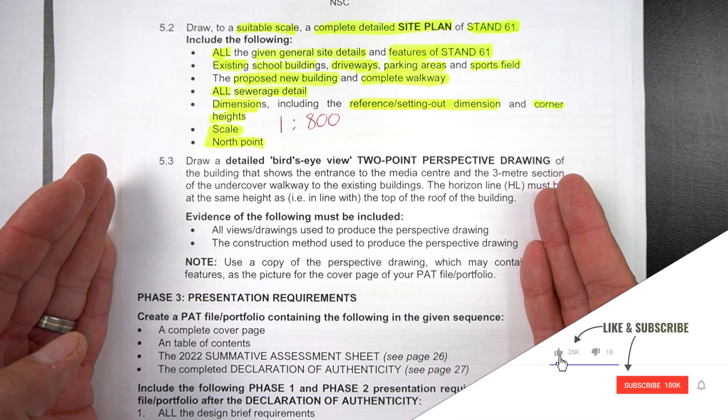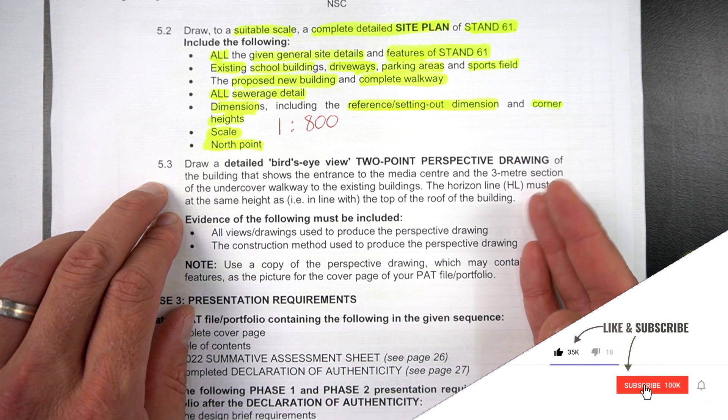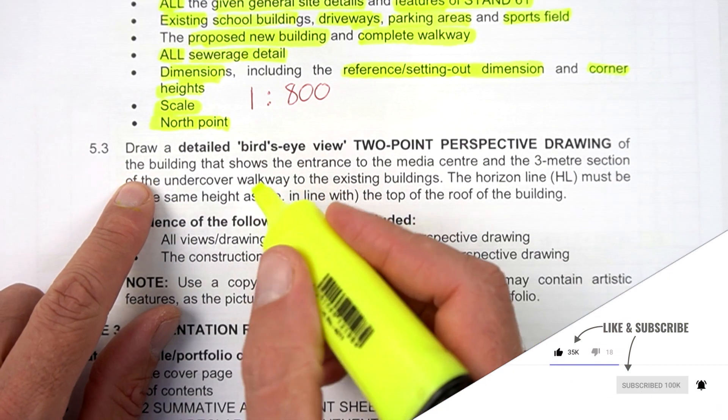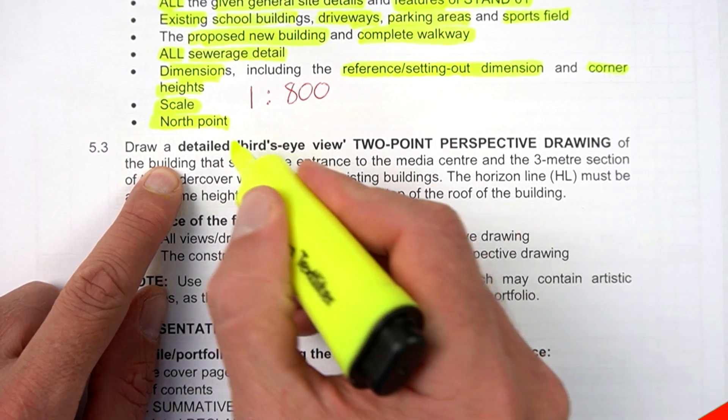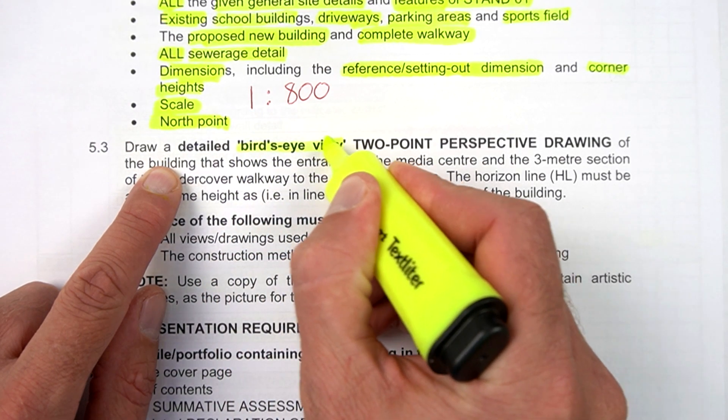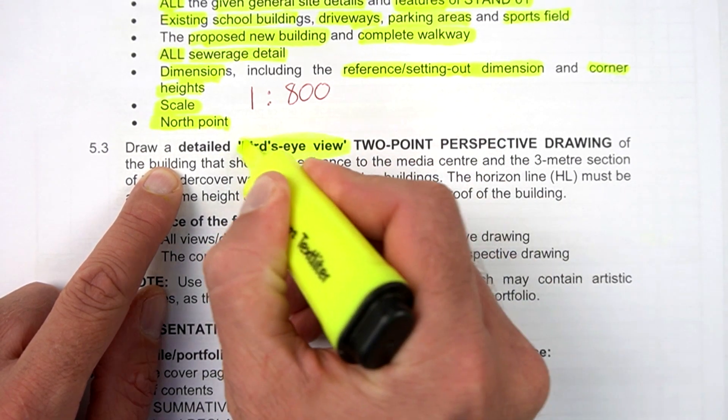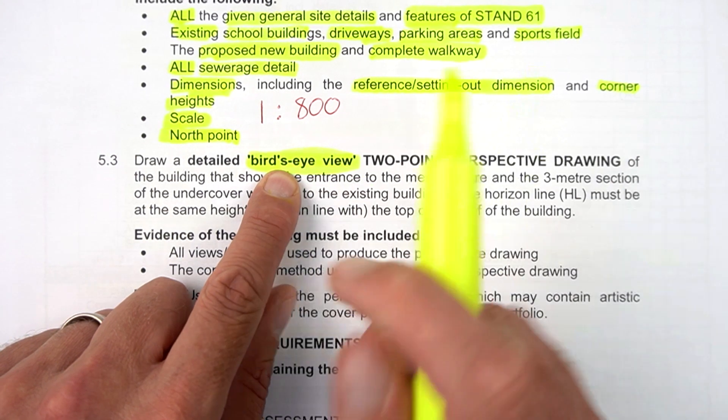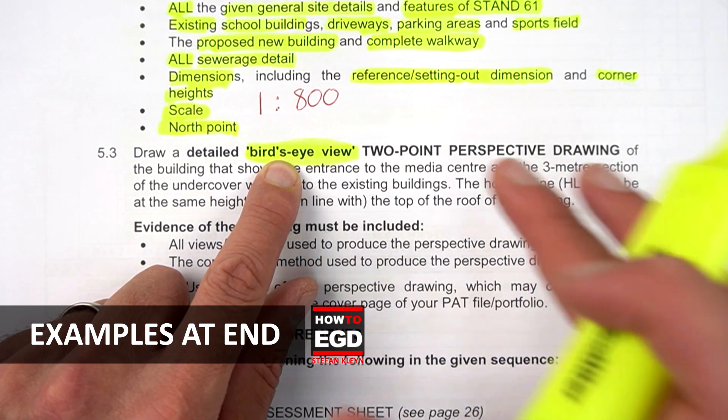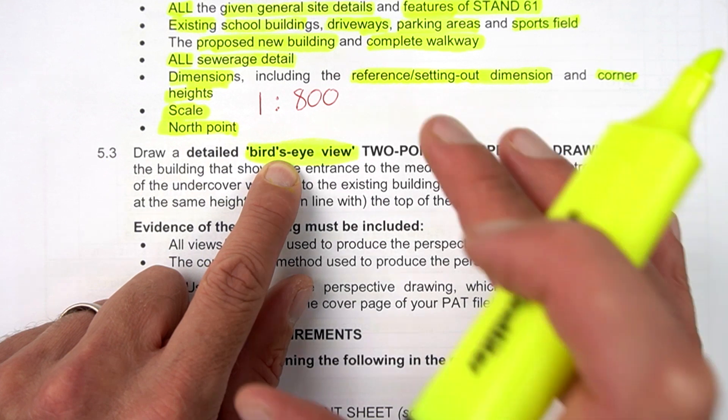To start us off, page 14, section 5.3, let's look at the instruction: draw a detailed bird's eye view. Stop right there. Bird's eye view, in other words, your eye is going to be higher than the actual building looking down onto that building.